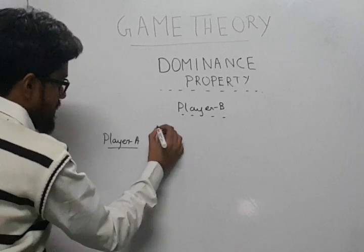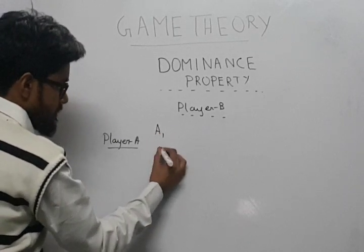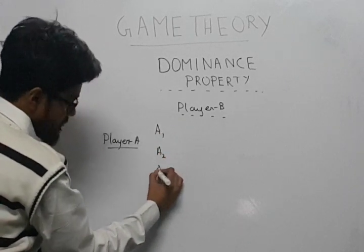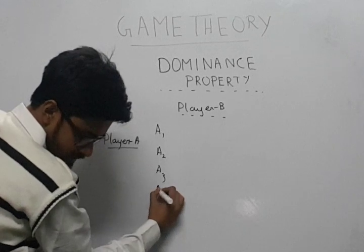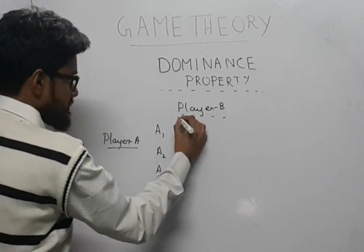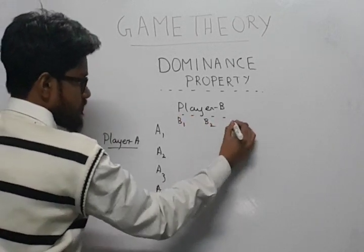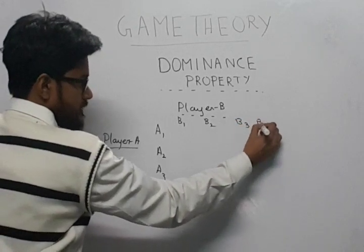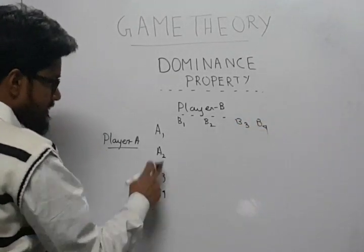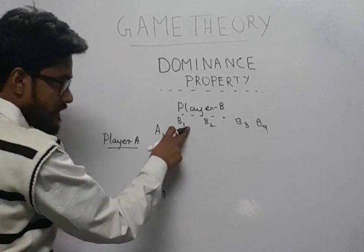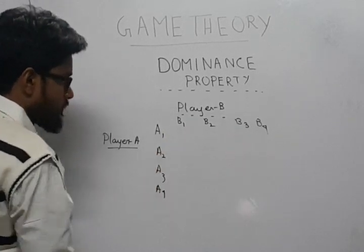Now A has the following strategies: A1, A2, A3, and A4. And B has B1, B2, B3, and B4.